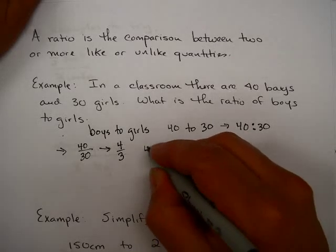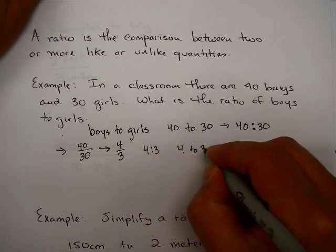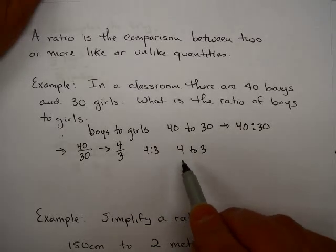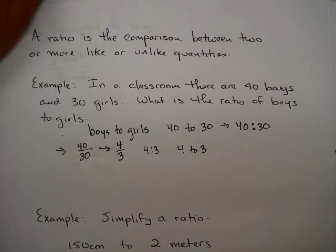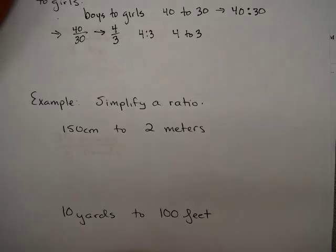So 4 thirds would be the answer that we would prefer as the ratio of boys to girls. In this case, you could also write this 4 colon 3 or say 4 to 3. This kind of means that for every 4 boys, there's 3 girls.